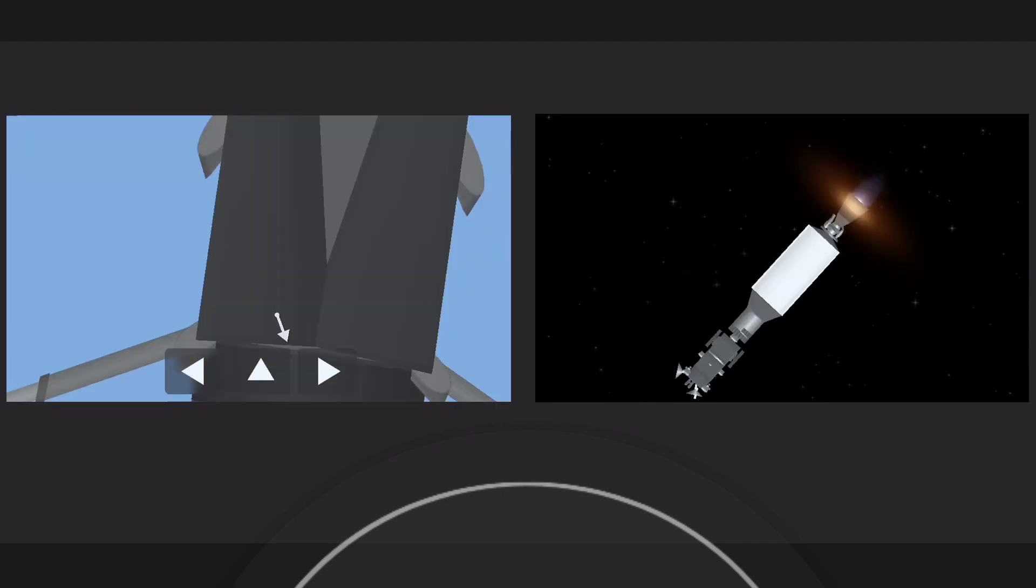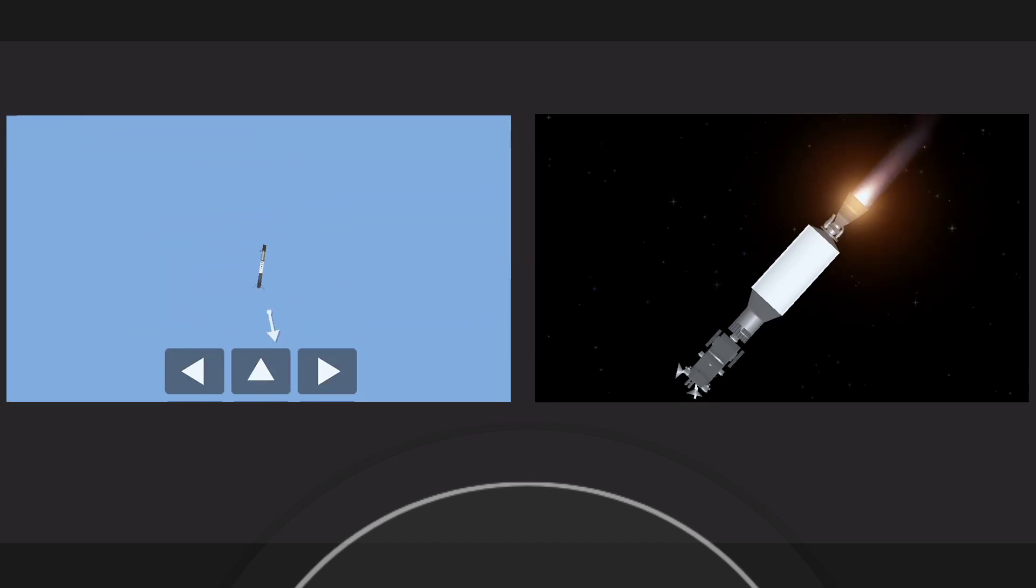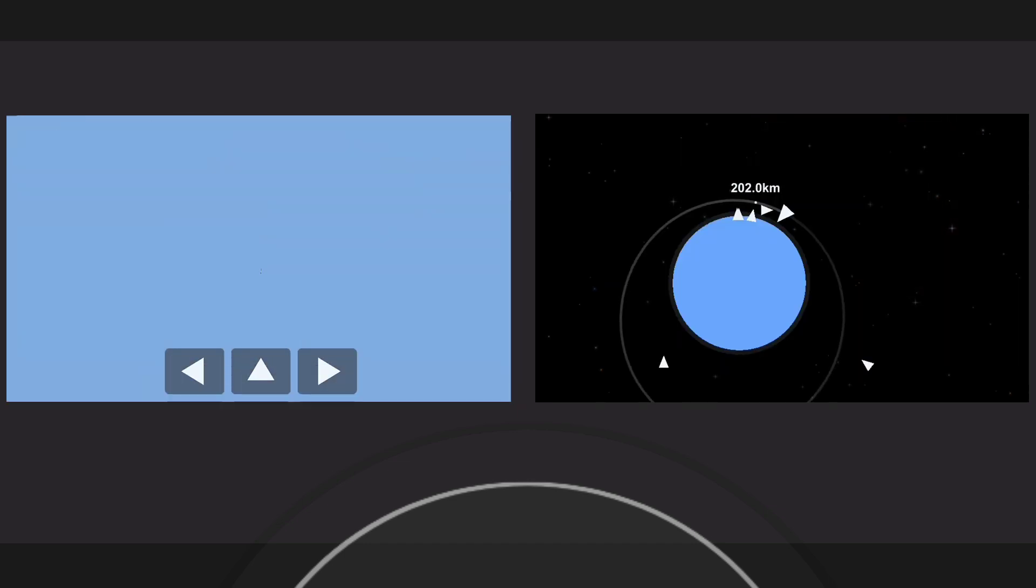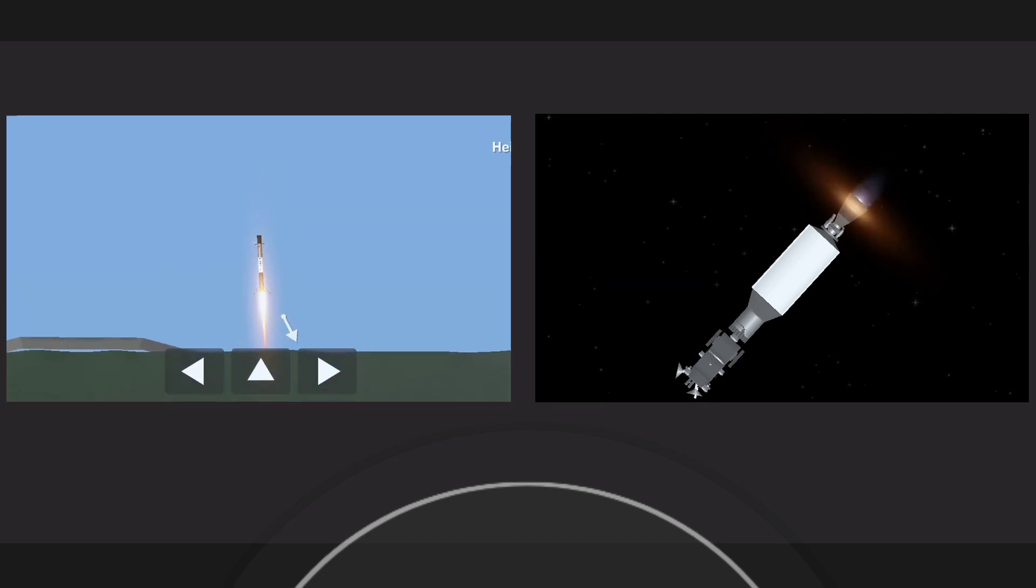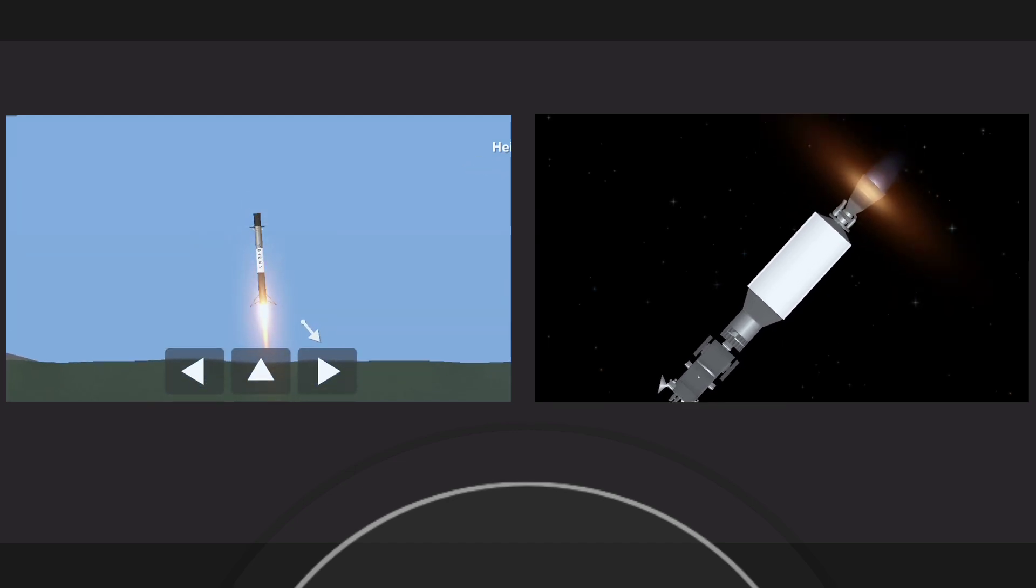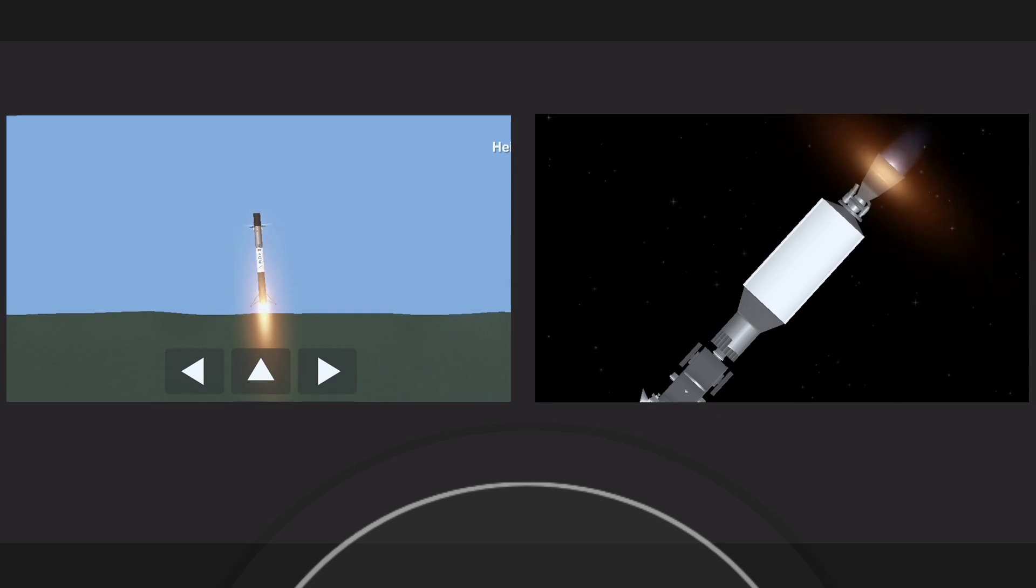And here comes Falcon 9 attempting its fourth landing. Stage one landing leg deploy. And you could not ask for a better landing than that. Falcon 9 has landed once again. That is number four for this first stage booster and the 58th overall of an orbital class rocket. What a way to start off tonight's mission.